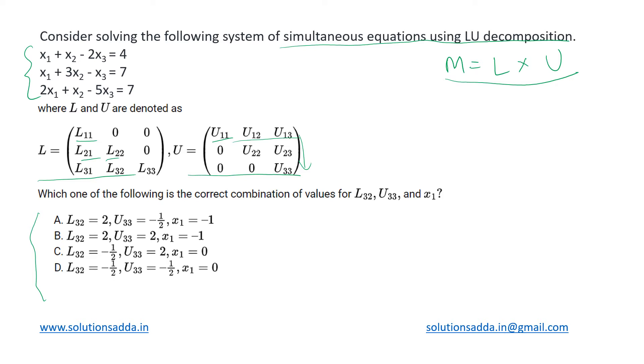So for starting, how can we convert the given equation into the matrix form? For that, first of all, let us just take the coefficients and convert that into a matrix: 1, 1, -2; 1, 3, -1; and 2, 1, -5, taken from the coefficients of x1, x2, x3 from these equations.